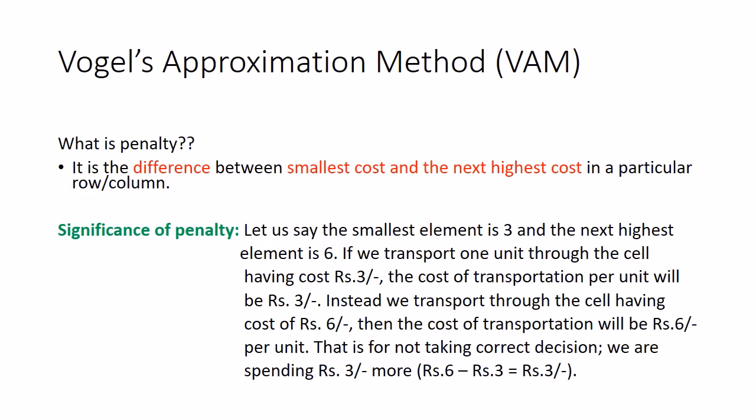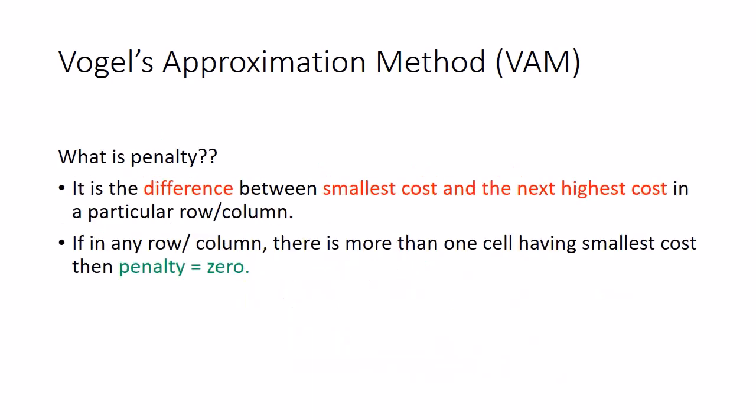The significance of penalty can be understood with this example: if you transport one unit through a cell having cost 3 rupees and if you transport through a cell having cost 6 rupees, the difference is 3 rupees. So if you mistakenly select the cell with high cost, you are spending 3 rupees more per unit — that is the penalty. Also, if any row or column has more than one cell with the smallest cost, the penalty in that case will be 0.